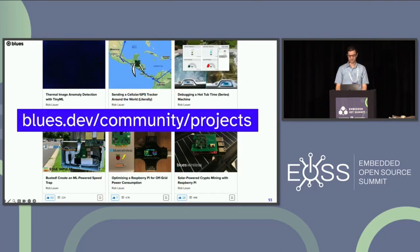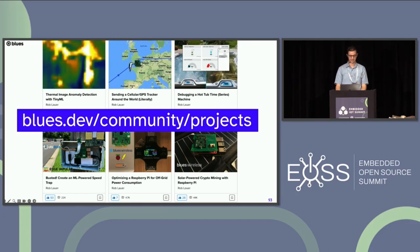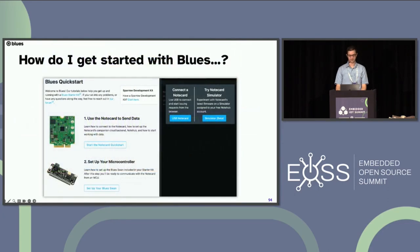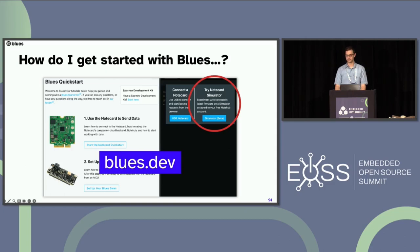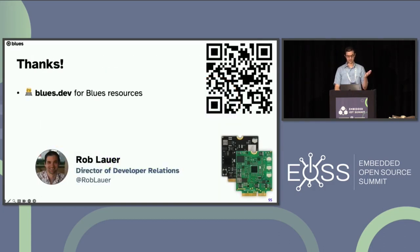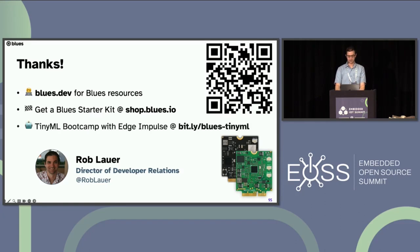A lot of these projects are documented and posted on Hackster, and we have a list on our developer site as well. If you're curious about anything shown today and are a try-before-you-buy person, you can try out the Notecard API with our simulator — a cloud-hosted version of the Notecard firmware — to get through the entire quick-start process. That's available at blues.dev. Check out blues.dev for all our technical resources, and get your own starter kit at shop.blues.io. At the end of July we're working with Edge Impulse and DataCake on a TinyML virtual bootcamp — July 21st — at bit.ly/blues-tinyml. Thank you all very much for attending.